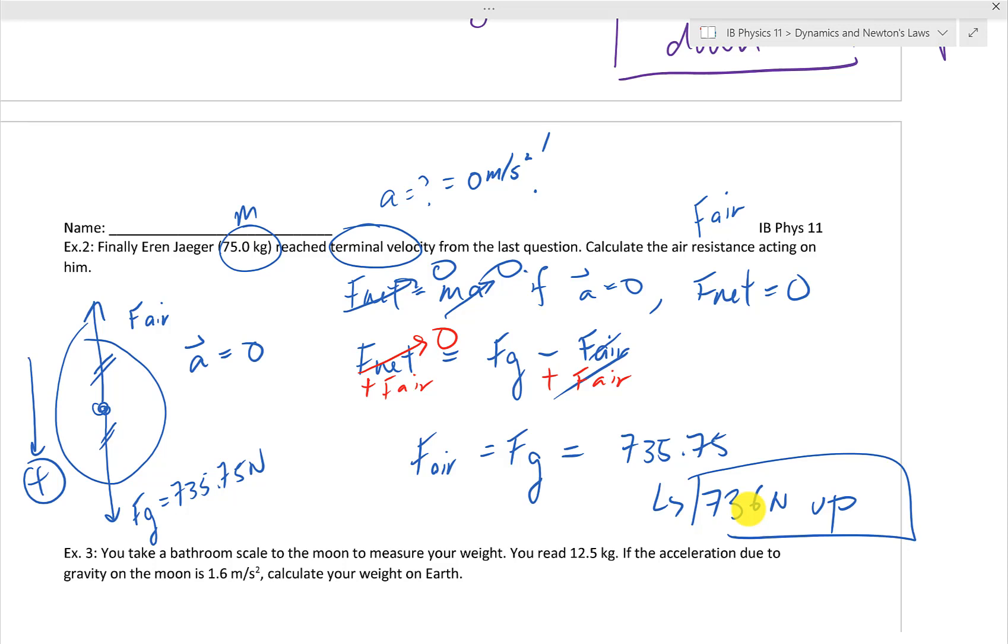Because Aaron is going at terminal velocity, he is not accelerating, meaning that the two forces opposing one another are going to be equal and opposite. So the air resistance will be just equal to his weight, but in the upwards direction.